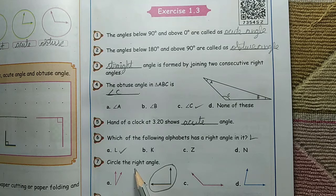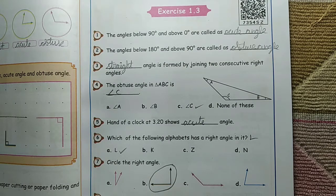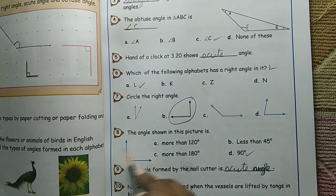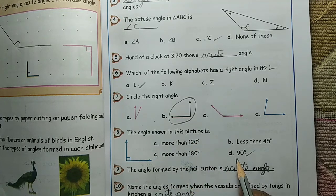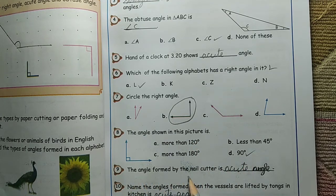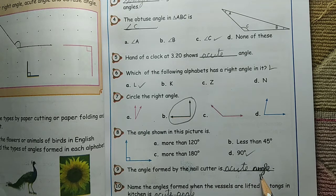Circle the right angle. B. The angle shown in this picture is 90 degrees. The angle formed by the nail cutter is acute angle.